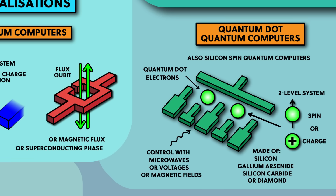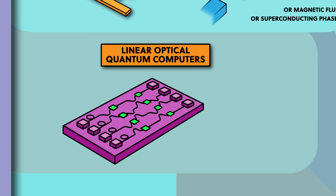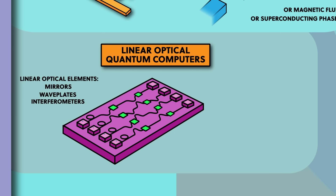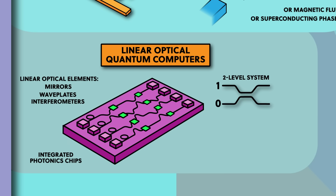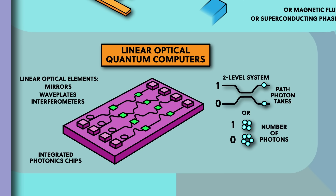These have all got different properties. Next we have linear optical quantum computing. Optical quantum computers use photons of light as the qubits and they operate on these qubits using optical elements like mirrors, wave plates, and interferometers. At scale this has been accomplished by printing these elements into integrated photonics chips. The two level system in an optical quantum computer can have different designs — either a superposition of different paths a single photon takes through the chip, or a superposition of different numbers of photons present in a path — and these can be manipulated by applying a voltage to a path.